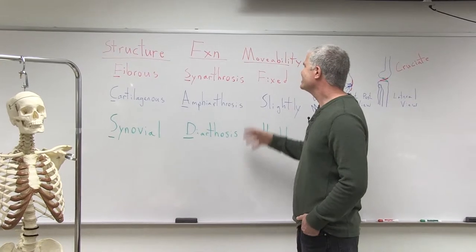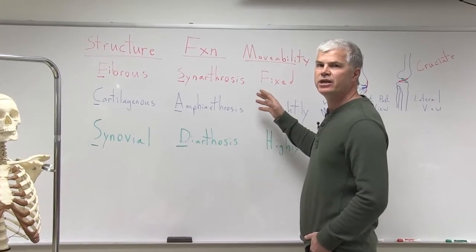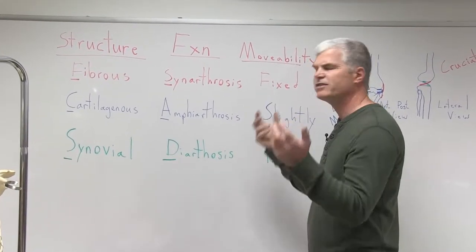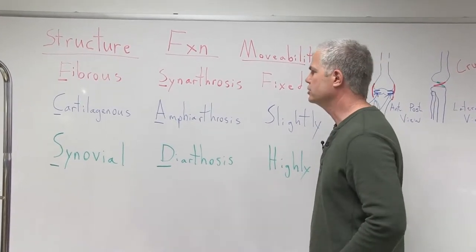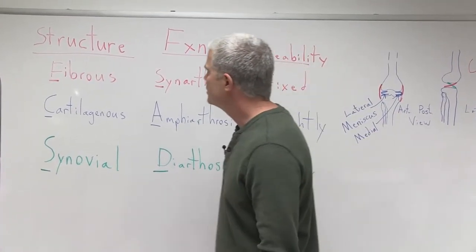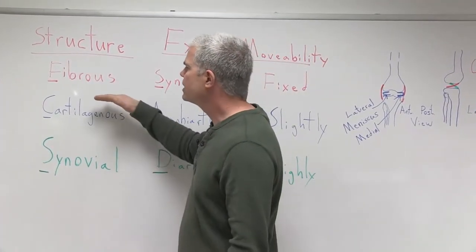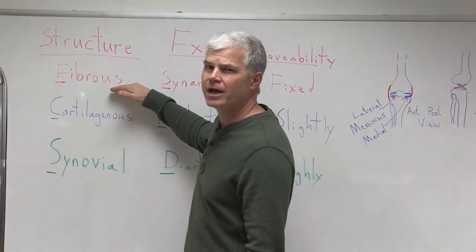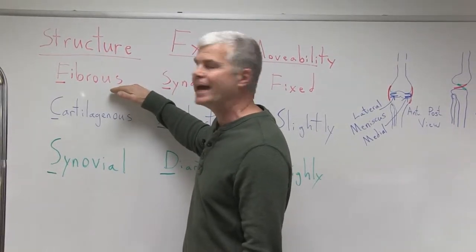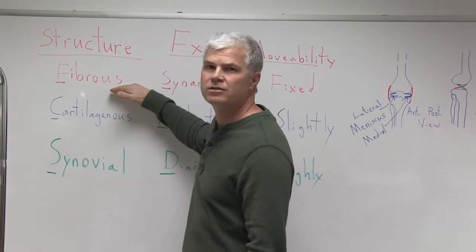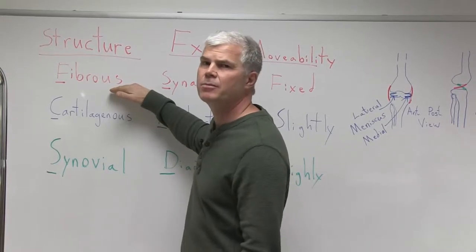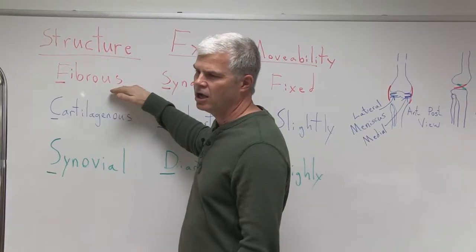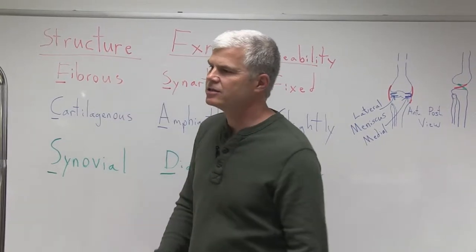The main function we're interested in is the movability of the joint — how much range of motion is associated with that particular joint. Structurally, they're classified as either being fibrous, where you actually have fibers extending from one bone to the next, and then that becomes calcified and essentially becomes bone. We can find some examples of these along the axial skeleton.